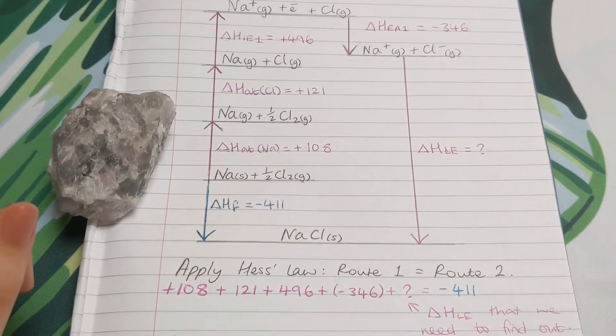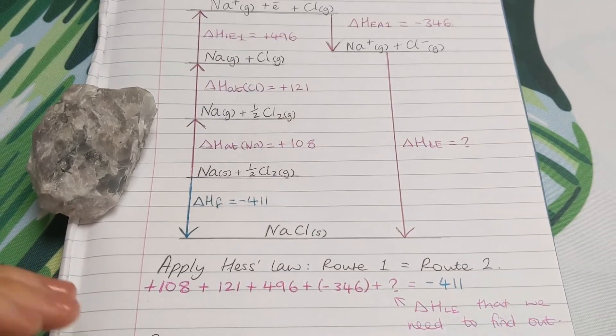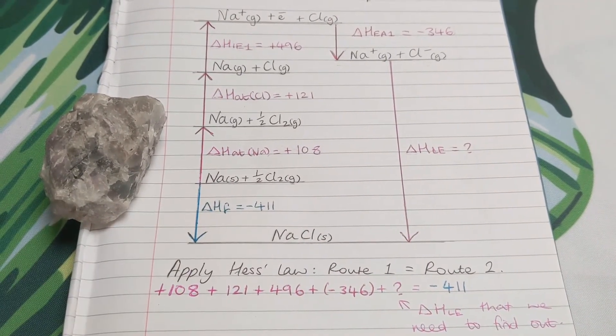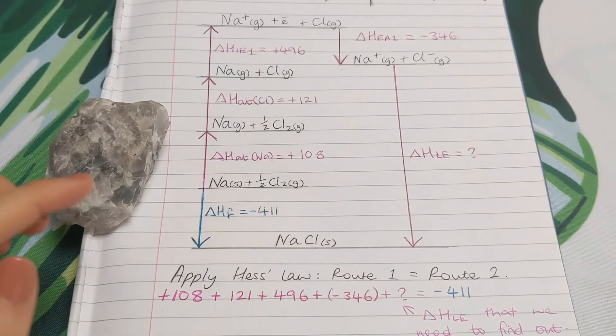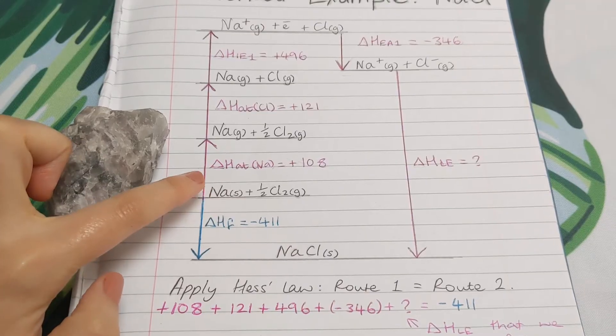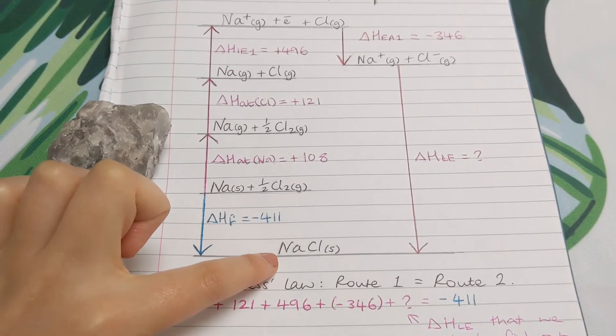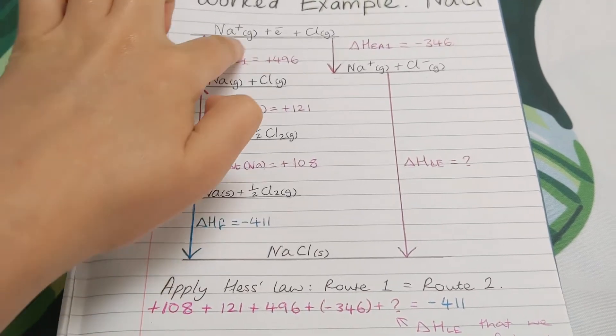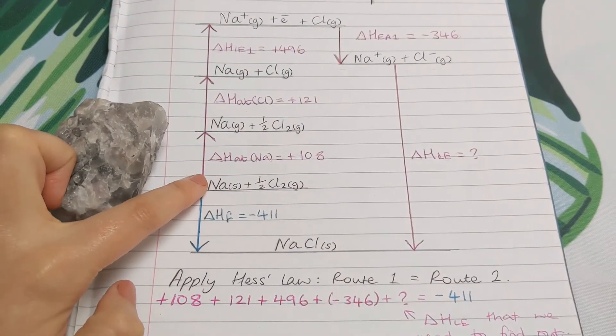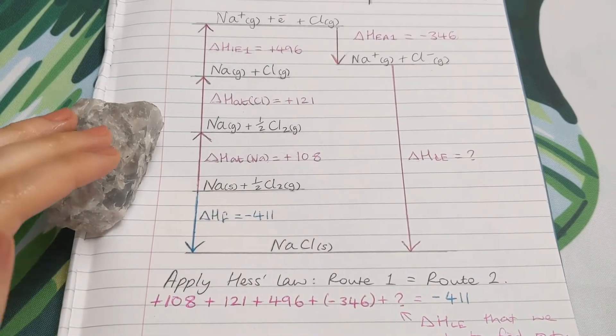Okay. So the next thing we need to do is to apply Hess's law. Now I've split this cycle up into two routes. So in other words, there's two ways of getting from here, the elements in their standard states, to here, the ionic solid.